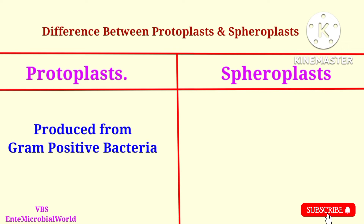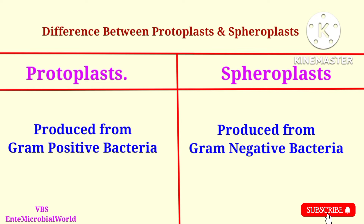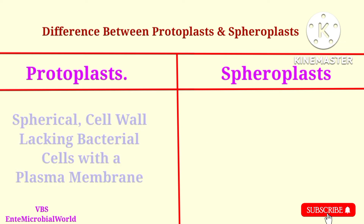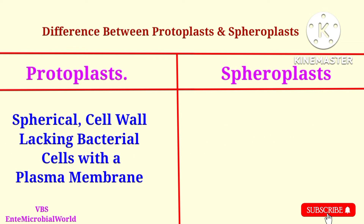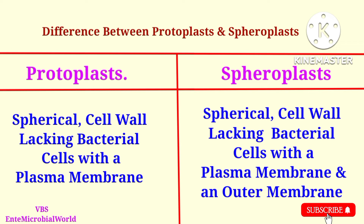Protoplasts are produced from gram-positive bacteria. Spiroplasts are produced from gram-negative bacteria. Spherical cell wall lacking bacterial cells with a plasma membrane are called protoplasts. Spherical cell wall lacking bacterial cells with a plasma membrane and an outer membrane are called spiroplasts.